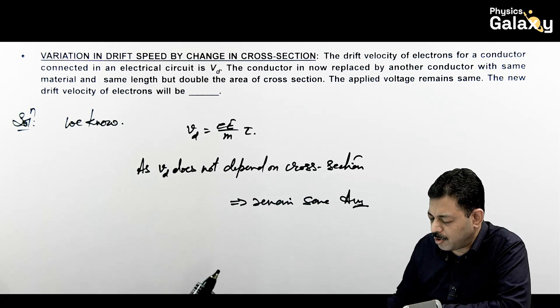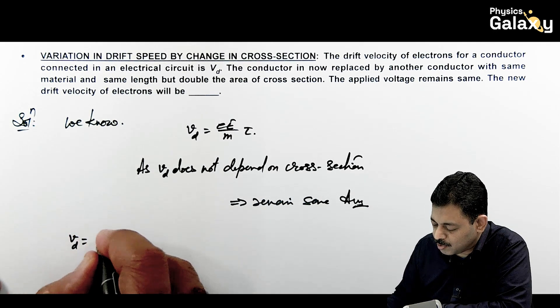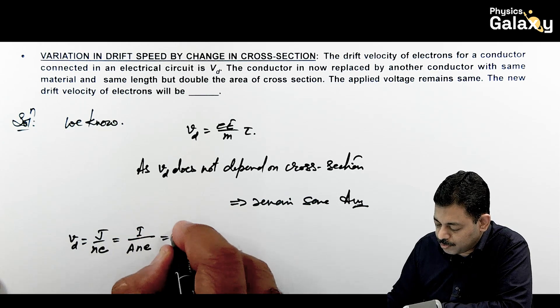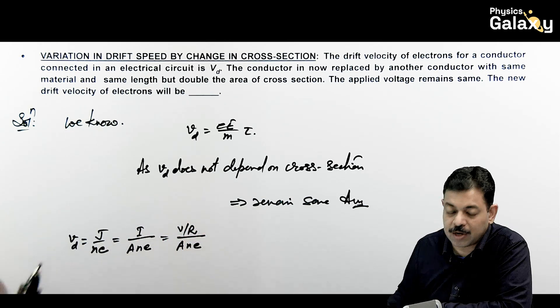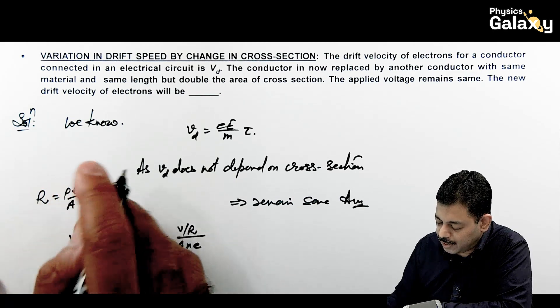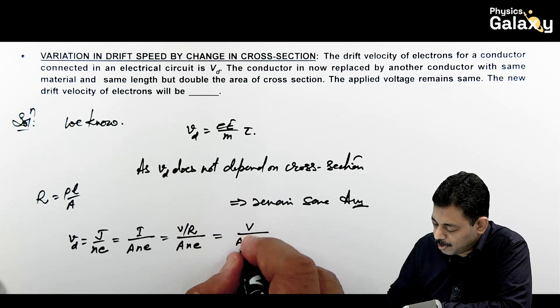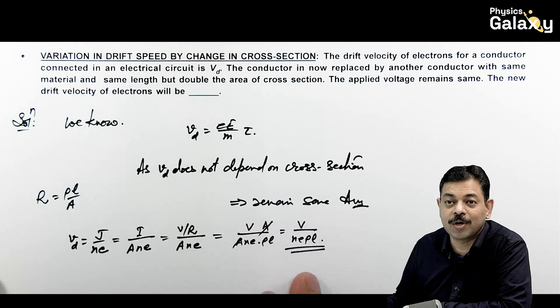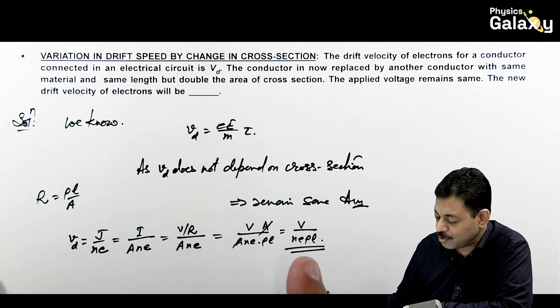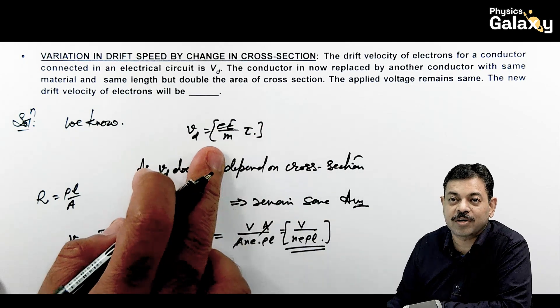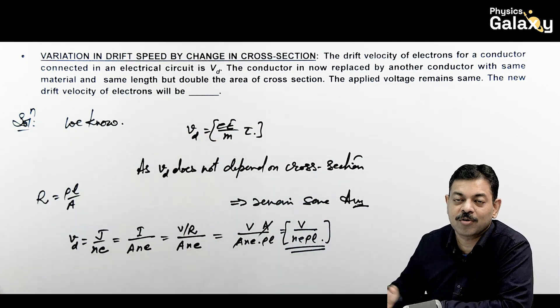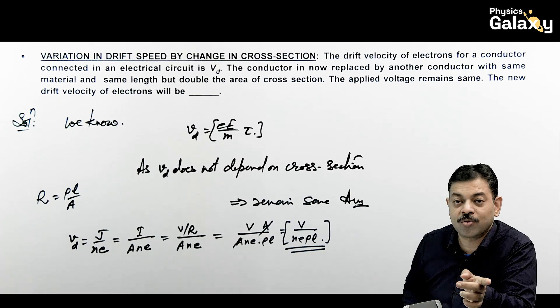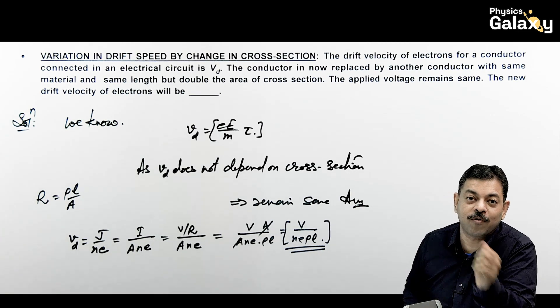You can also use the drift speed expression Vd = J/ne where current density can be written as I/A. But current you need to substitute V/R, and substituting resistance value for a given wire which is ρL/A, area again gets cancelled out. This gives you V/(ne·ρL). You can check this way that drift speed does not depend on area of cross section. Other factors which you can see in this expression are the factors on which drift speed depends. This helps in overall understanding, so you can add these in your notes or revision checklist because these cases are extremely helpful.